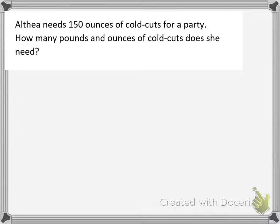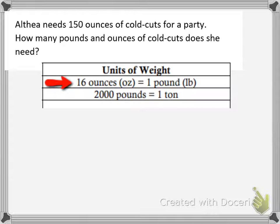Althea needs 150 ounces of cold cuts for a party. We have to figure out how many pounds and ounces that is. So we first need our conversion factor that there are 16 ounces in one pound.